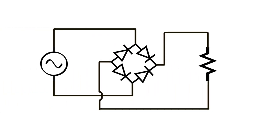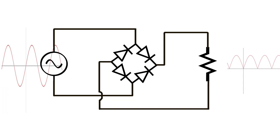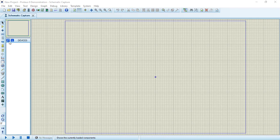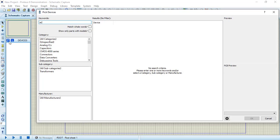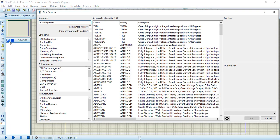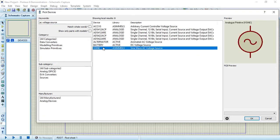A full wave rectifier circuit passes the positive half cycle of a sine wave and converts the negative half cycle of the sine wave to be positive as well. It is considered a more advanced AC to DC converter than the half wave rectifier.